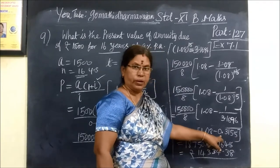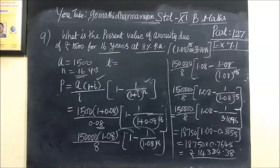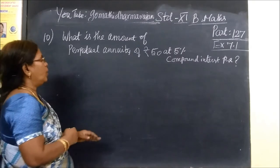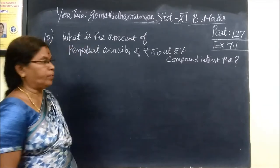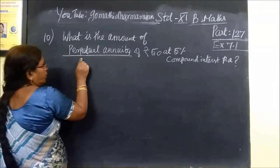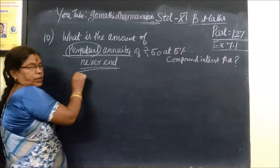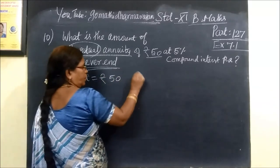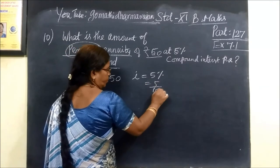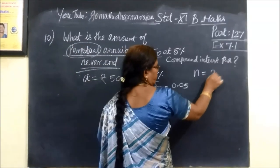1.08, 1.09, compound interest per annum. This is perpetual annuity. This means never end. A is given, A is equal to 50. I is equal to 5 percent, this is 5 by 100, this is equal to 0.05. N is not even, it is infinity.